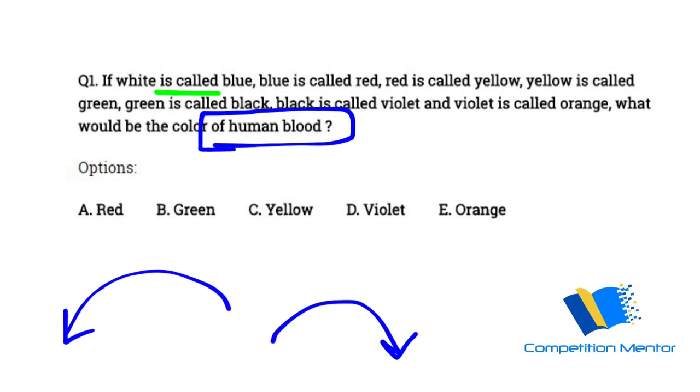When 'is called' is used, you can see that the sentences are given like blue is called red. If you understand this, then we find that blue color is being called as red, means the color is blue only, but its name is being given as red. Similarly, for other colors also, they give some name and we have to find the color of human blood.